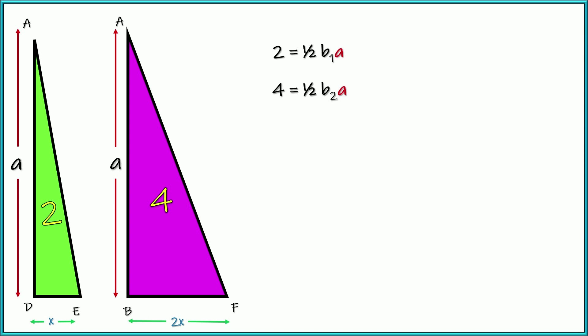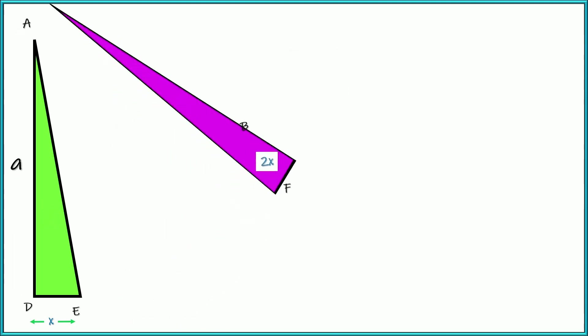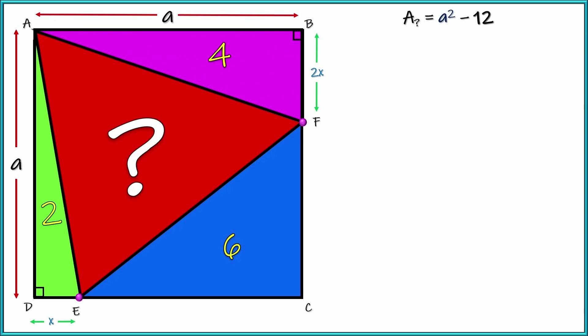Right? They're both the length A, which means that the purple triangle's base has to be twice as big because everything else is the same, but the area is twice as big. So the base is twice as large. All right. So I know that that's going to be 2X. So let's go ahead and put that back in context of our big picture.